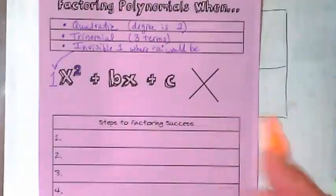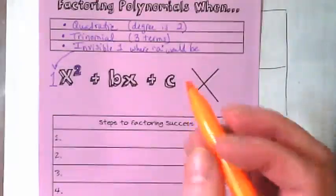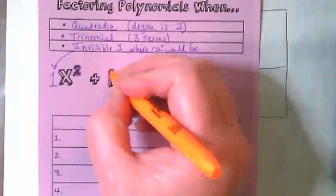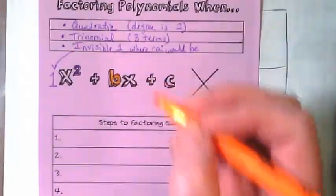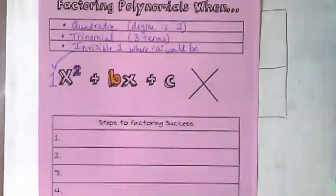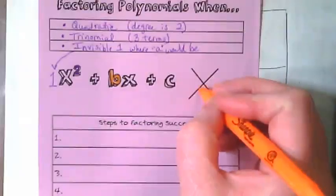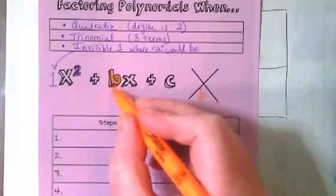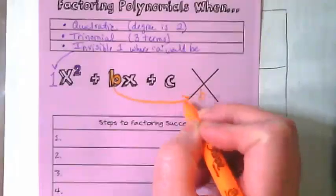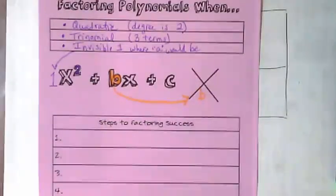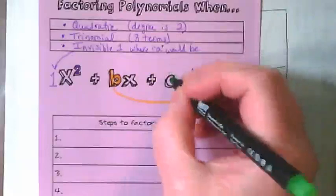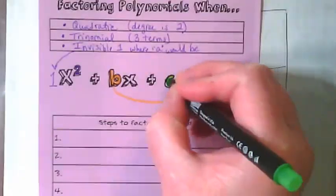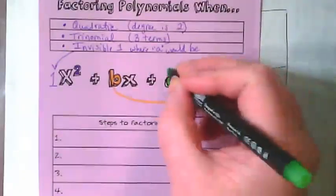Next we're going to talk about our x puzzle. It's important to remember when we're using our x puzzles that the b goes at the bottom and the c goes on the top.